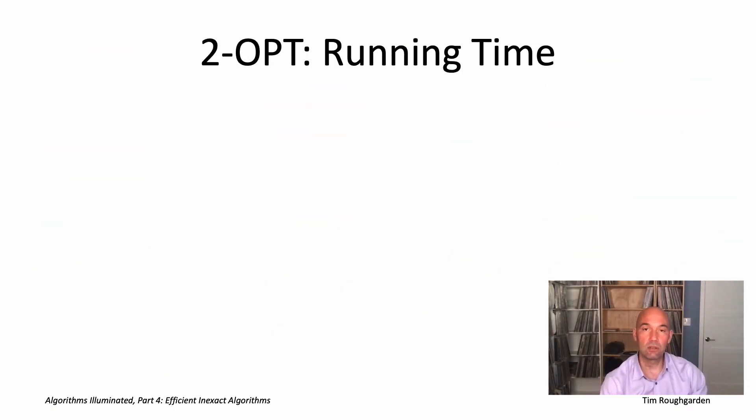So as always with algorithms, we want to discuss what is the running time and to what extent is the algorithm correct. So let's start with the running time of the two-opt heuristic. First question you might ask is, is this even going to terminate in finite time? Or could this while loop just run forever? Well, remember, there's a lot of traveling salesman tours. As we saw in a quiz a few videos ago, it's one-half times quantity n minus one factorial. So it's an exponential number of tours. But there's only a finite number of tours.